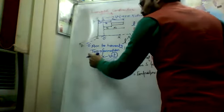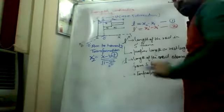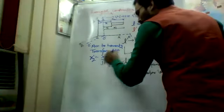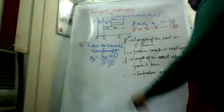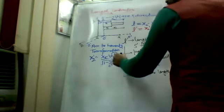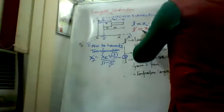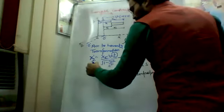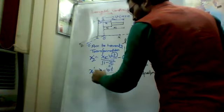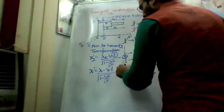So x2-dash is related to the stationary frame's x2 coordinate. This becomes: x2-dash equals x2 minus vt over under root of 1 minus v-squared over c-squared — let's call this equation 3. And x1-dash equals x1 minus vt upon under root of 1 minus v-squared upon c-squared — equation 4.